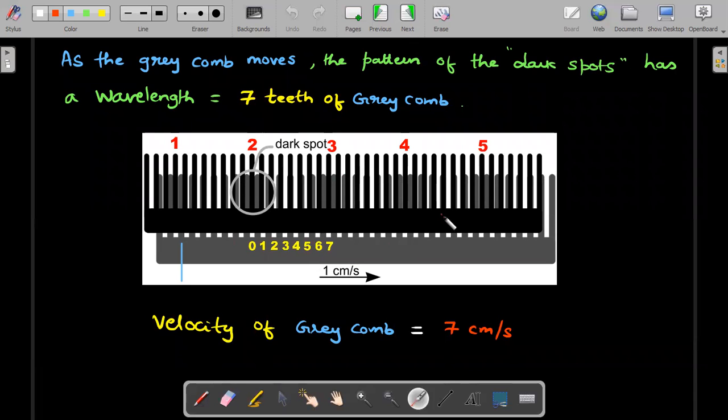I've zoomed out of the diagram so I can write what I said. As the gray comb moves, the pattern of dark spots—1, 2, 3, 4, 5—has a wavelength of 7 teeth of gray comb. The velocity of the dark spots should equal 7 cm/s, moving at 7 times the speed of the gray comb.